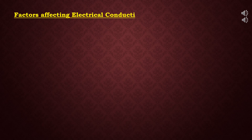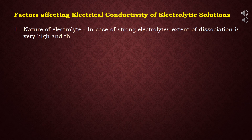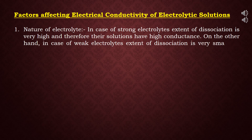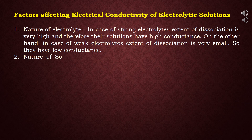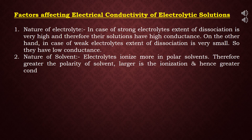Our next topic is factors affecting the electrical conductivity of electrolytic solutions. First factor is the nature of electrolyte — in case of strong electrolytes, the extent of dissociation is very high, and therefore their solutions have high conductance. In case of weak electrolytes, extent of dissociation is very small, so they have low conductance. The second factor is the nature of solvent — electrolytes ionize more in polar solvents; therefore, greater the polarity of the solvent, larger the ionization, and hence greater the conductance.